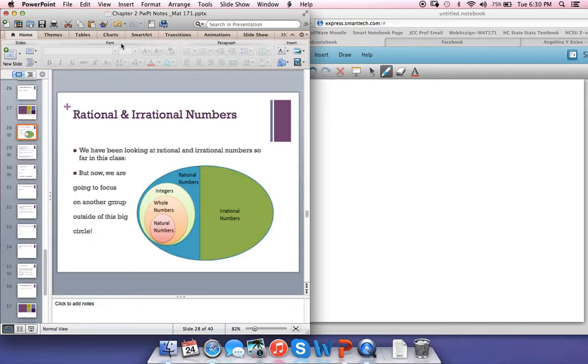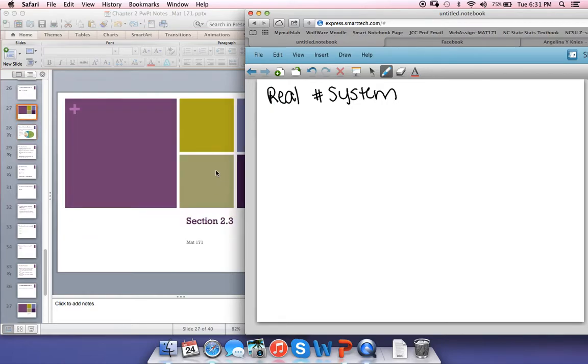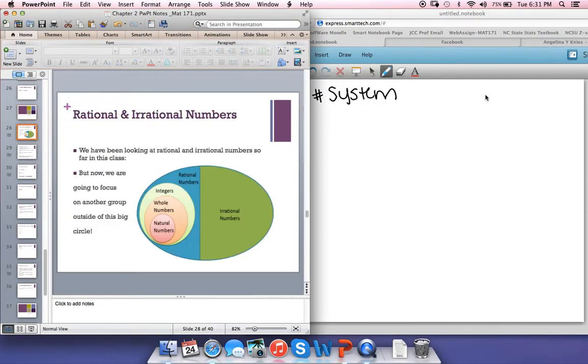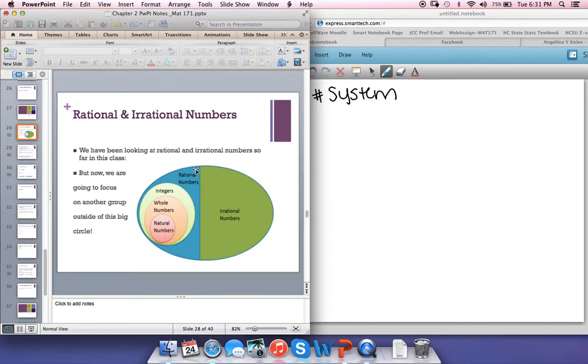In this class so far, we have looked at rational and irrational numbers. I have this circle here. The circle consists of all of your rational and irrational numbers. Rational numbers are any number that can be written as a fraction. So it may be a nasty-looking decimal, 0.3333333 repeating forever, but that's able to be written as a fraction, one-third. Maybe I have four-thirds. Four-thirds is able to be written as a fraction, one-half. That can be 0.5, but 0.5 can be written as one-half.